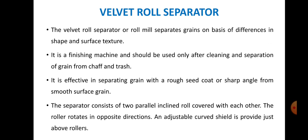This is about the draper belt separator, which separates material due to difference in shape and surface structure properties. Now we will start with the velvet roll separator. This velvet roll separator separates grain on the basis of differences in shape and surface texture of the mixture. It is a finishing machine and should be used only after cleaning and separation of grain from chaff and trash.